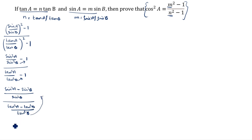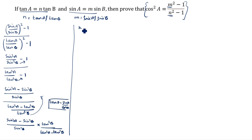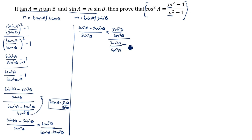This becomes sin square a minus sin square b divided by sin square b, into tan square b divided by tan square a minus tan square b. Now, tan theta is equal to sin theta divided by cos theta. So we will split: sin square a minus sin square b divided by sin square b, into sin square b divided by cos square b, divided by sin square a divided by cos square a minus sin square b divided by cos square b.